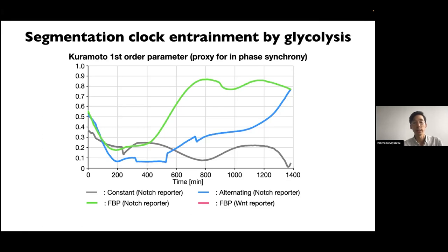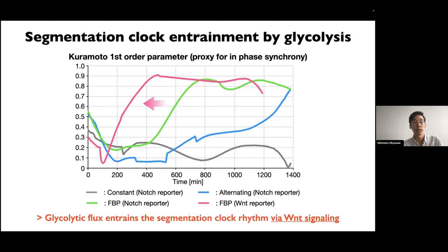These data show that glycolytic flux can function as an instructive signaling cue to synchronize the segmentation clock. I further asked whether Wnt signaling behaves differently from the Notch signaling pathway in this context, since Wnt is also part of the segmentation clock. Using an FBP entrainment experiment with a Wnt signaling reporter, I was surprised to find that Wnt signaling oscillation gets entrained one or two cycles before Notch signaling oscillation. This suggests glycolytic flux entrains the segmentation clock rhythm via Wnt signaling, and that glycolytic flux signaling has some specificity.